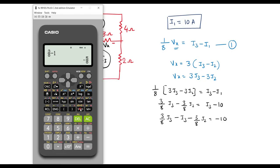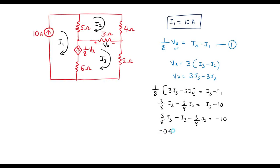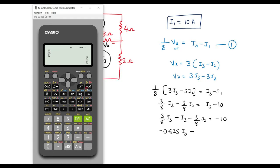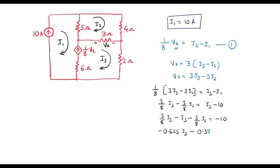Simplifying, its value will be minus 0.625 I3, and minus 3/8, which gives 0.375, that is 0.375 I2, is equal to minus 10. Or I can write it in order as: minus 0.375 I2 minus 0.625 I3 is equal to minus 10. Let me call it as equation number 2.